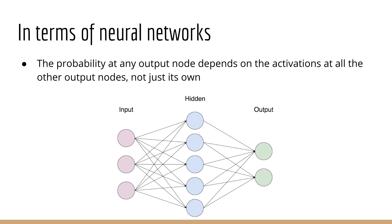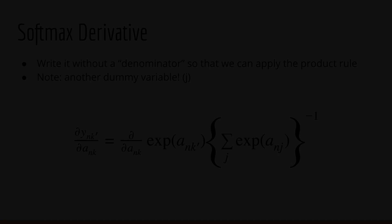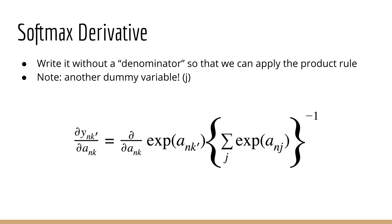Now what does this mean in terms of a neural network or logistic regression? Well, it simply means that the probability at one output node depends on the activations at other output nodes, and hence depends on the weights that go to the other output nodes. That makes sense because, in order to get a probability in the first place, we have to divide by the sum of all the activations combined.